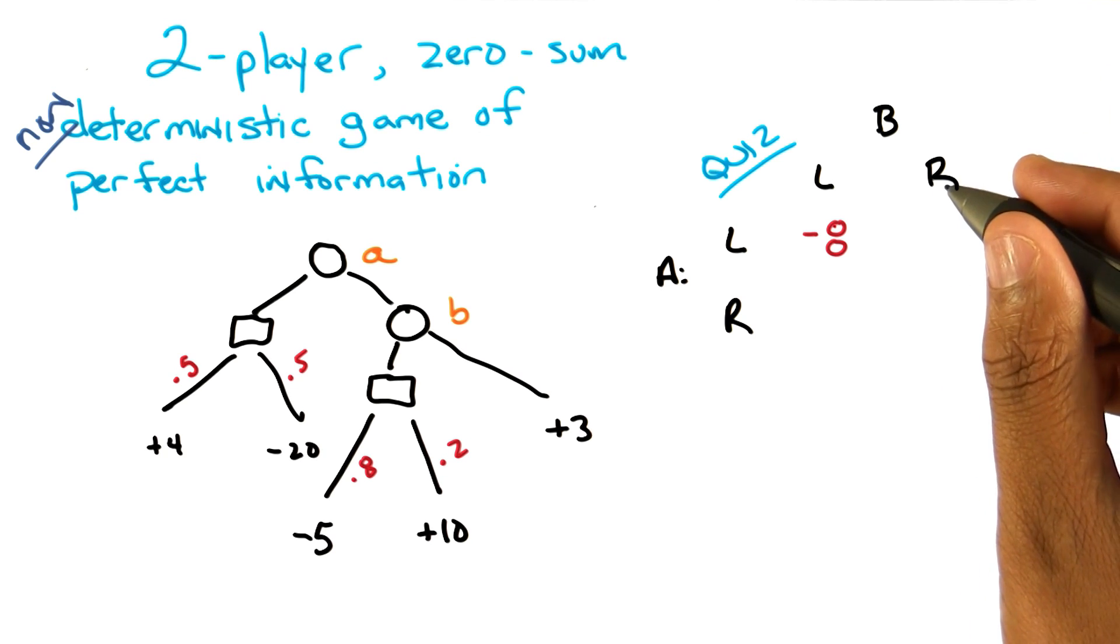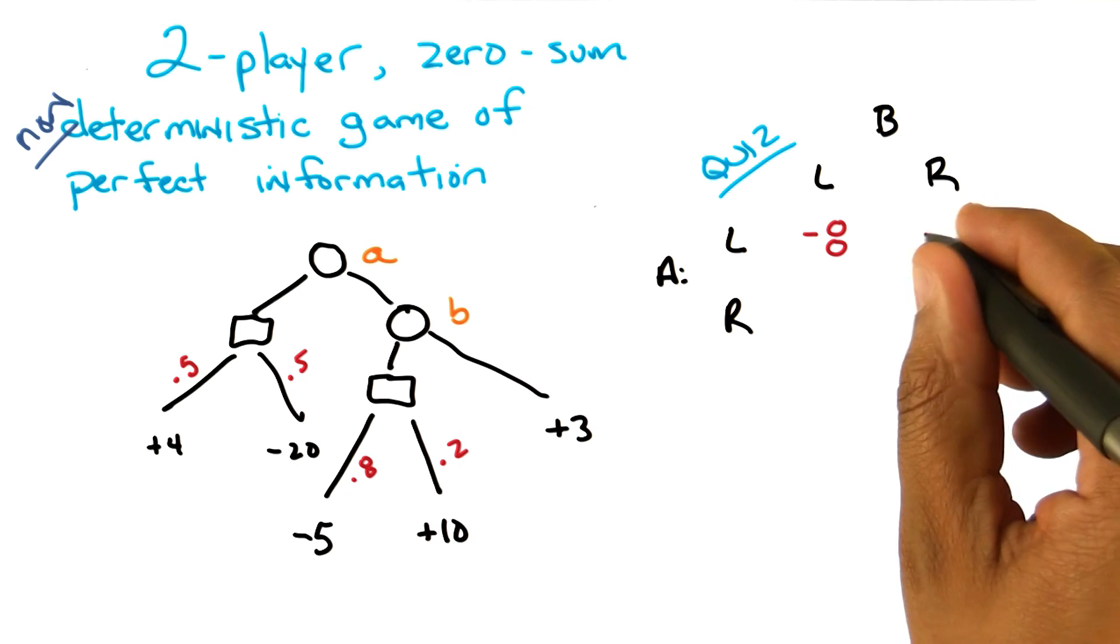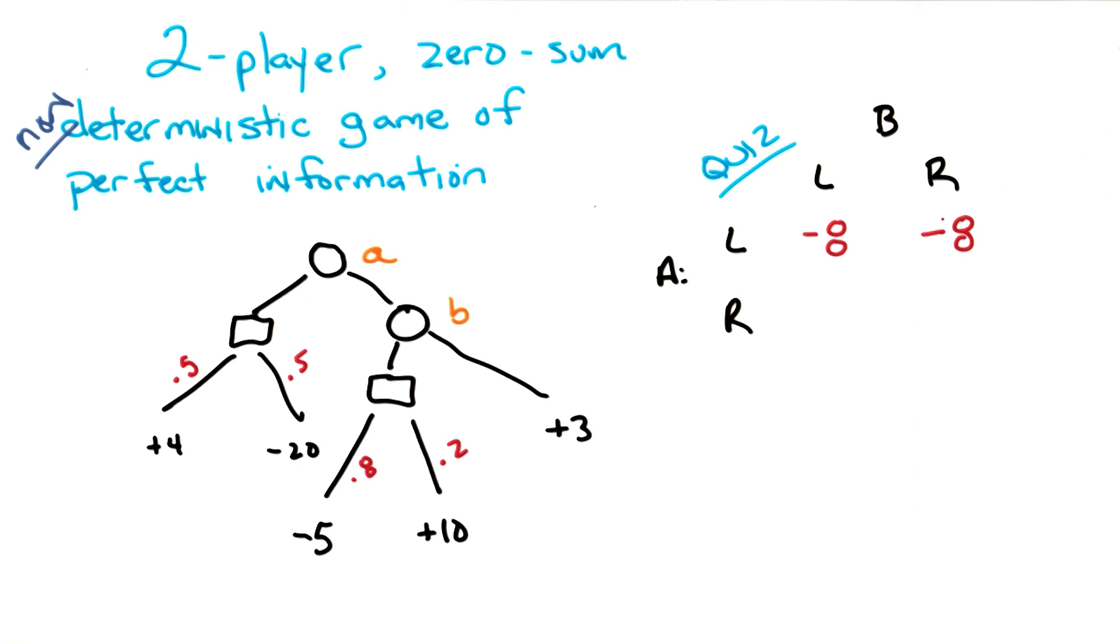Okay, what next? And it doesn't matter what B does. So the negative 8 is also in the upper right corner of the matrix. Fair enough.